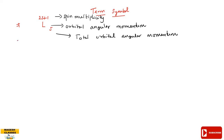Term symbols are used to find microstates. Microstates are discussed in a separate uploaded video. This video is a short overview of term symbol comparison in spectroscopic notation.